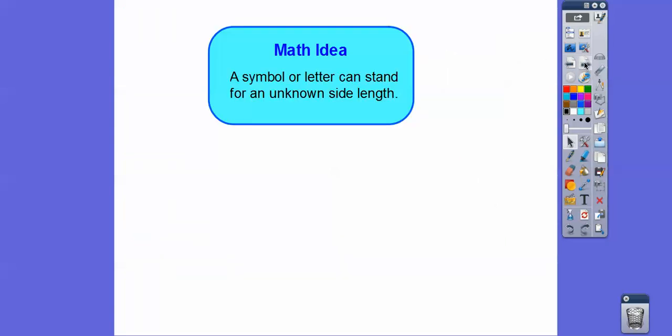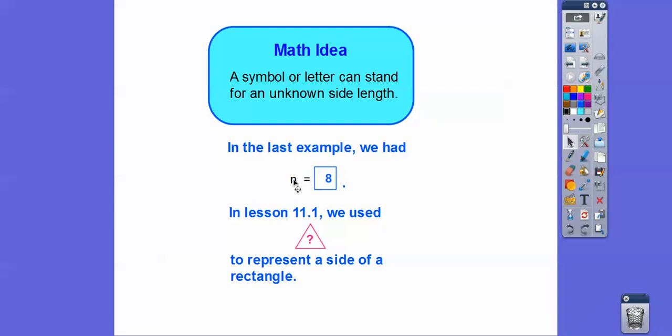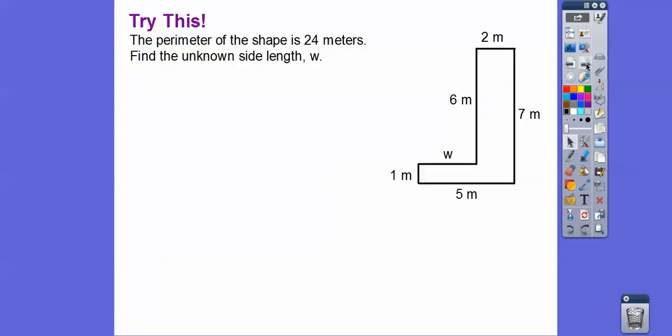So here's another one here. Math symbols, you guys. A symbol or a letter can stand for an unknown side length. So in that last example, we had N. N was our letter, and that stood for the unknown side length. In a couple of lessons ago, I used, I don't know what your textbook used, but you can use any symbol. I used a triangle with a question mark in it, and it represented the side length of a rectangle. But you can use anything. Typically, they'll use letters. And you might see like X involved a lot, or the letter Y involved a lot.